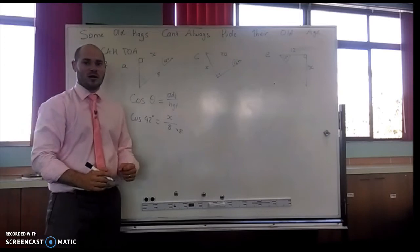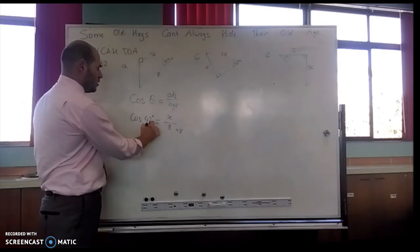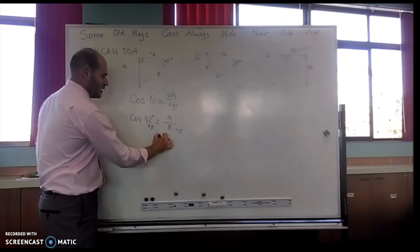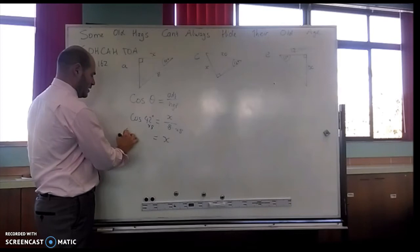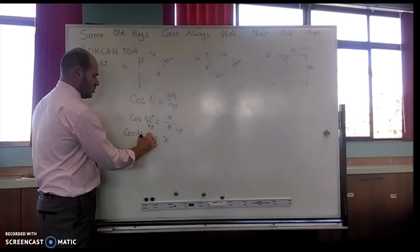So I'm going to multiply that side by 8. My golden rule says if I multiply this side by 8, I multiply this side by 8. So these ones cancel out, and here I'm left with x. Here I'm left with cos 42 times 8.